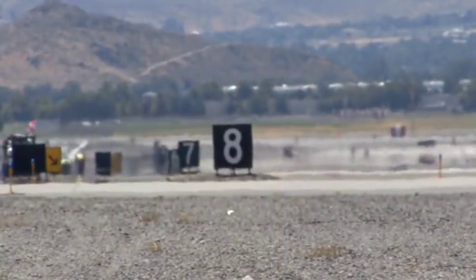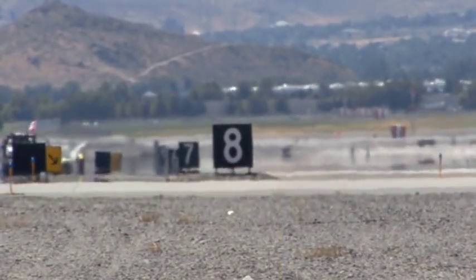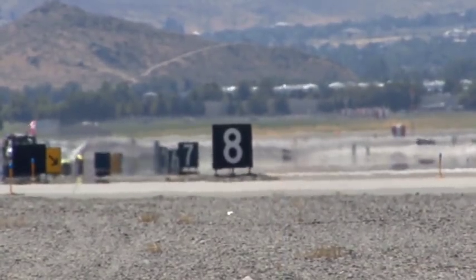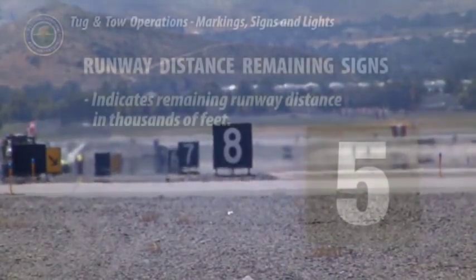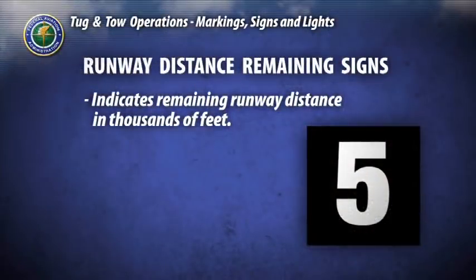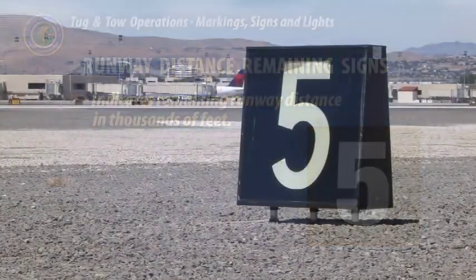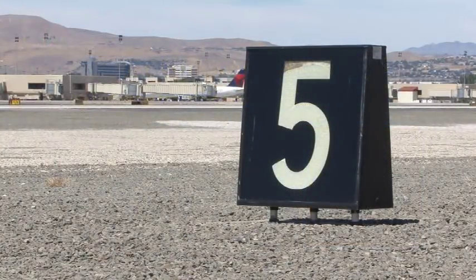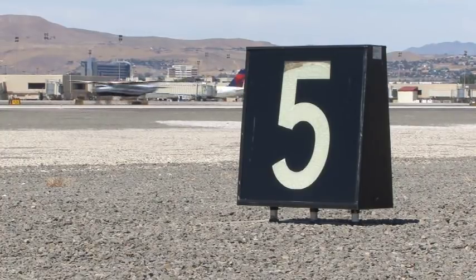Runway distance remaining signs are installed along the sides of runways and indicate the distance of runway remaining in thousands of feet. In this example, 5,000 feet remain on the landing runway.